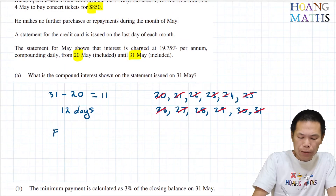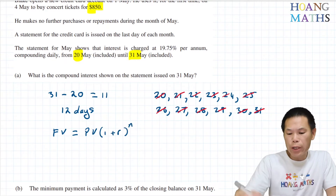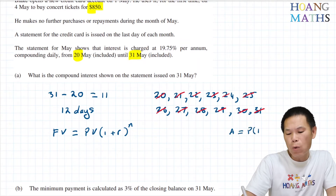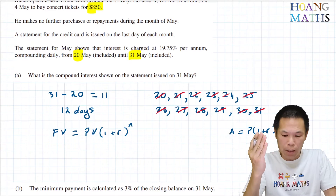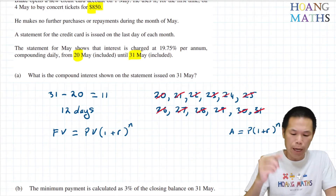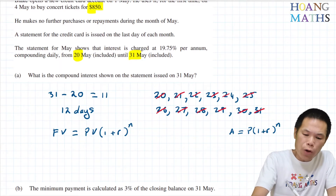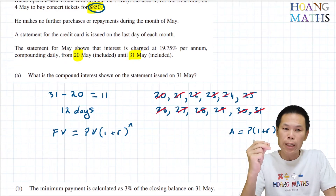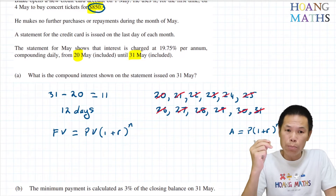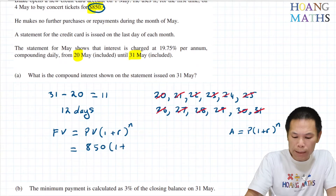The future value is equal to the present value times (1 + r) to the power of n. Or you can write A = P(1 + r)^n if you like — it's the same. To work it out, we just substitute the values in. We know that $850 is the balance at the beginning — that is how much he owed — so that is the present value. So we write $850 times (1 + r), power of n.